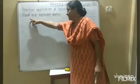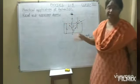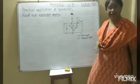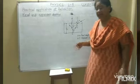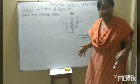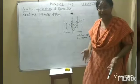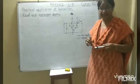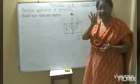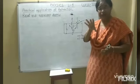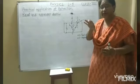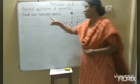First, we will see the meaning of real and apparent depth. As we have seen in our common experience, if any object is placed in a tank which is filled with water, then the object appears to rise. That means the image of the object, which we see from above, appears a little higher. This image is called the apparent depth.